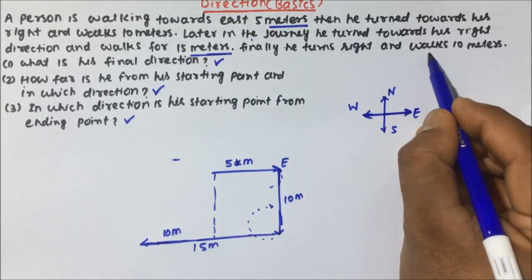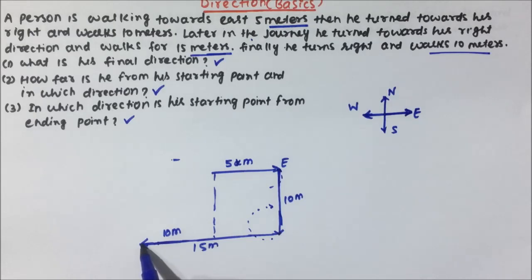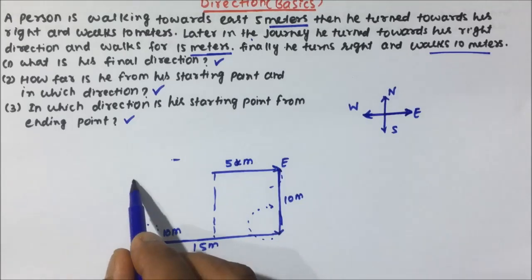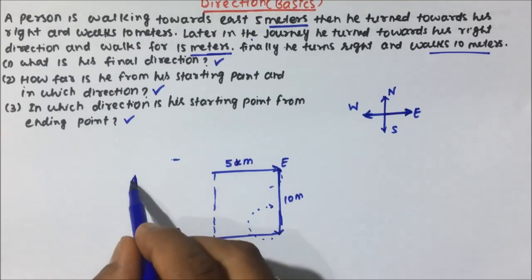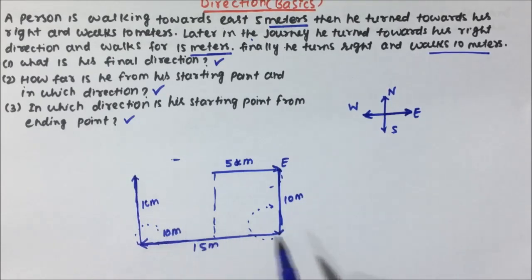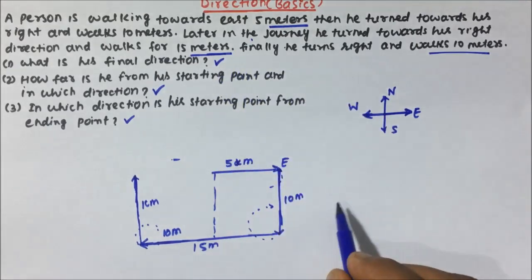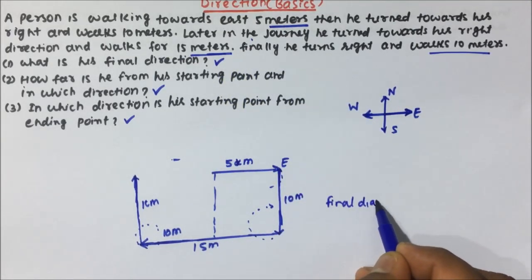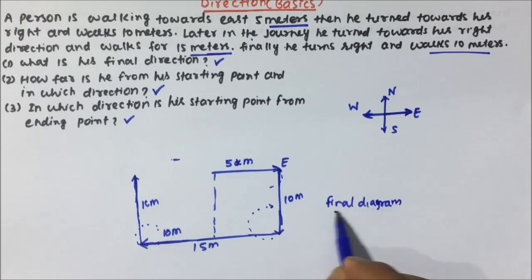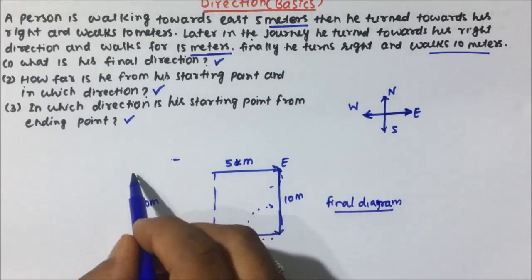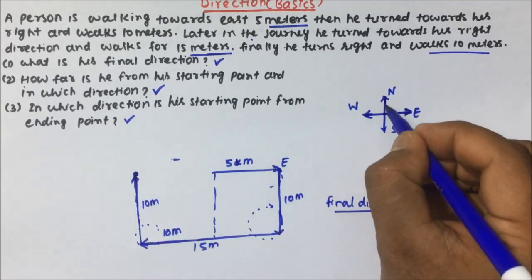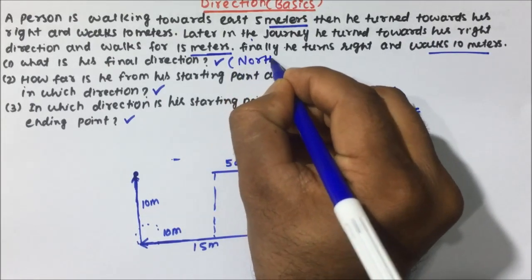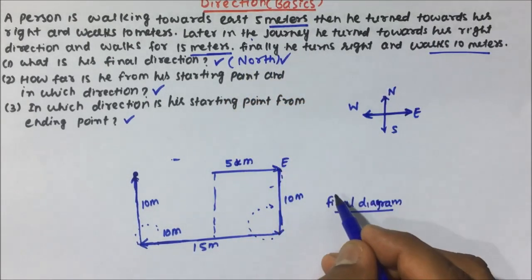Finally, he turns right and walks 10 meters. Again, find the clockwise direction by putting your pen point there — this will be the clockwise direction (north), so the person is moving 10 meters to the right (northward). Now this is the final diagram. The person is now at the final position. What is his final direction? The person is facing north direction. So the final direction of the person will be north.